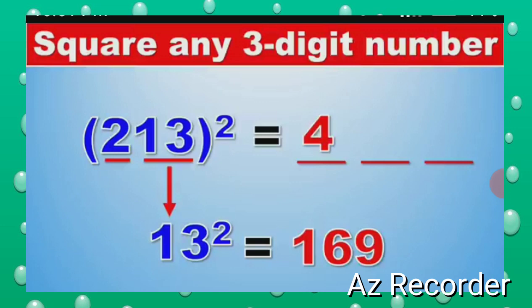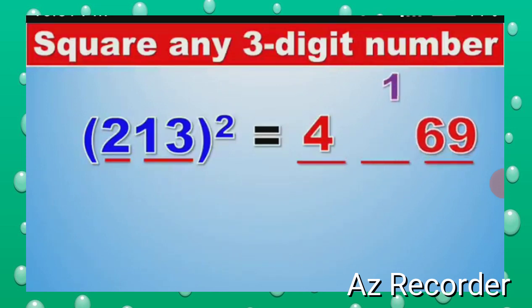Now this is very interesting because as you can see, 169 is three digits long, but this part of the answer can only have two digits. So what we do is we keep the 69 right where it is and we carry over the 1 to the next part, which is the middle part.